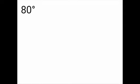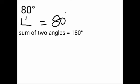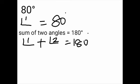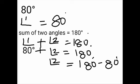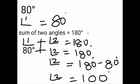In the same way, we find the other measure of the supplementary angle. Question Number 2 gives 80 degrees. Consider Angle 1 as 80 degrees. Since adding two angles to get 180 degrees makes them supplementary, we write: Angle 1 plus Angle 2 equals 180 degrees. We know Angle 1 is 80 degrees, so Angle 2 equals 180 minus 80, which equals 100 degrees. Therefore, the other measure of the supplementary angle is 100 degrees.